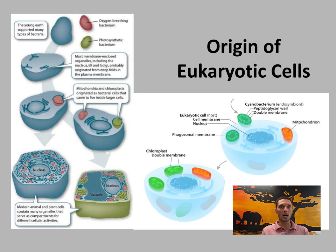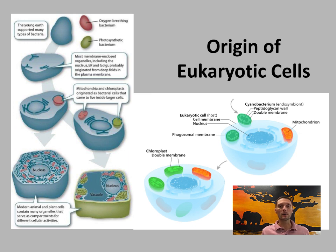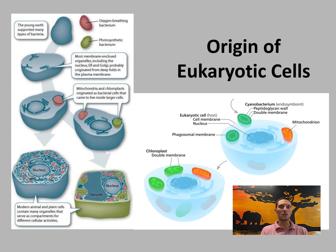Endocytosis is the taking in of external particles by the surrounding membrane, pulling them inward. In humans, phagocyte cells ingest viruses or bacteria for destruction by surrounding them. Paramecia use this process to acquire food, as does an amoeba. This ingesting of smaller cells into larger cells is probably what led to eukaryotic cells — except the relationship became mutualistic rather than destructive.